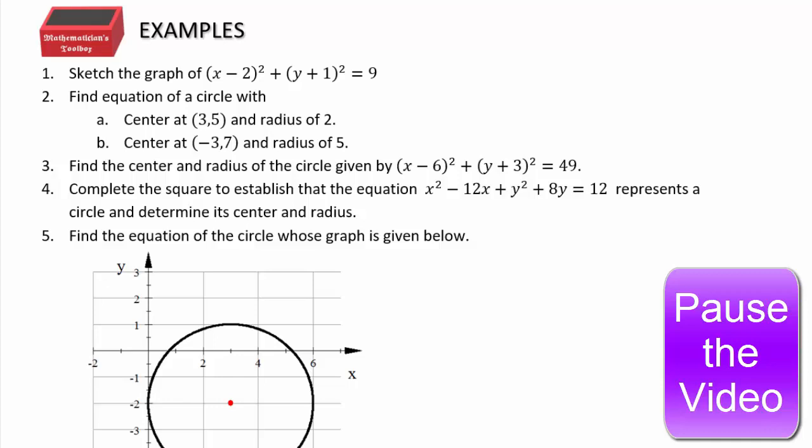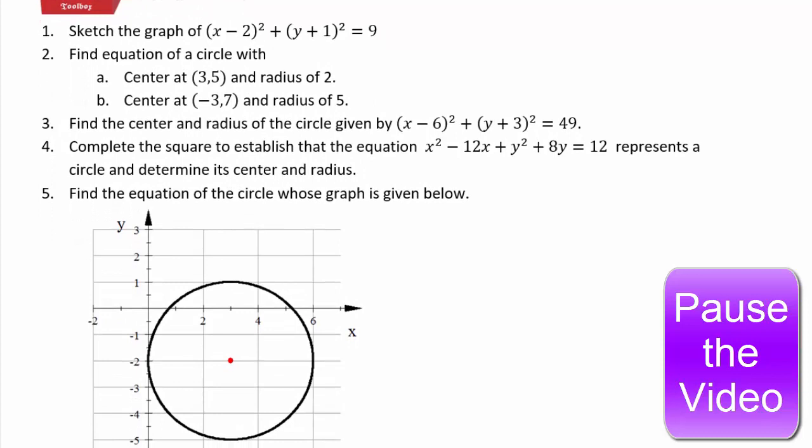Sketch the graph of (x−2)² + (y+1)² = 9. Find the equation of circles given certain conditions. Find the center and radius when an equation is given. Complete squares to get the center and radius. And find the equation of a circle that is already graphed. Pause the video, do all five, and then come back.